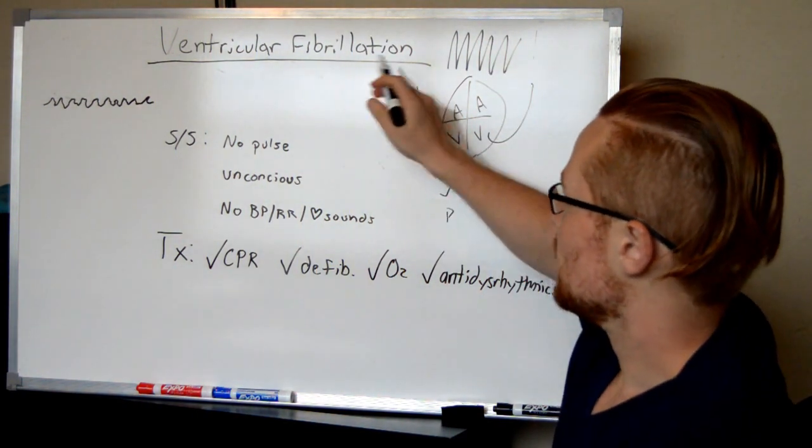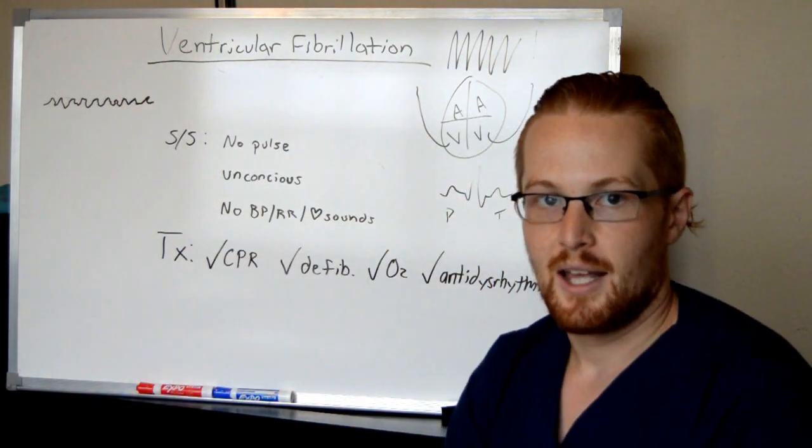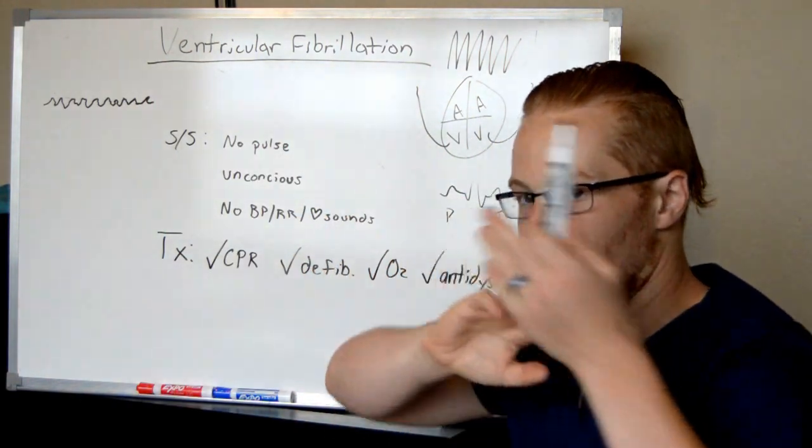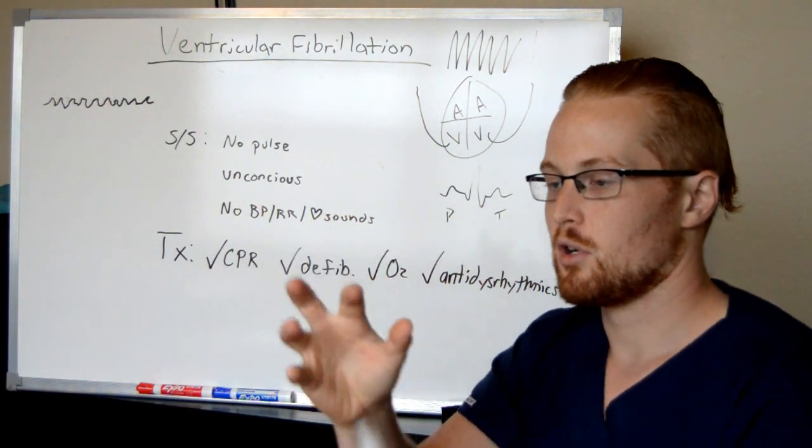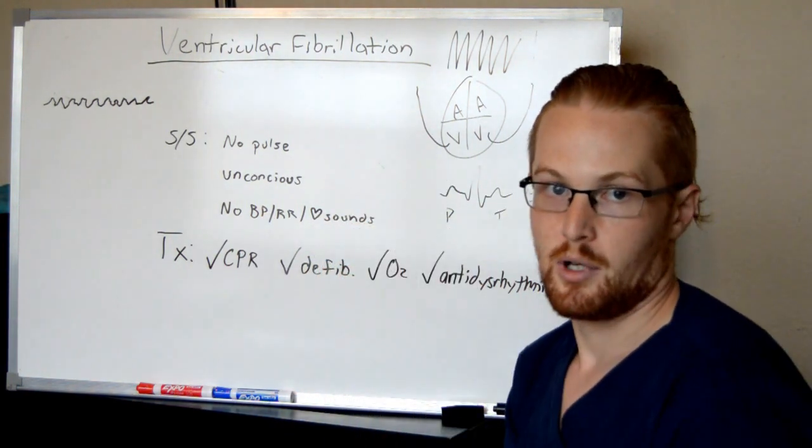In V-fib, they're fibrillating. Fibrillating doesn't mean that they're contracting. That means that there's electricity going everywhere, and so the chamber is just quivering. The muscles are just shaking.